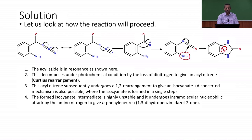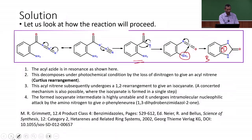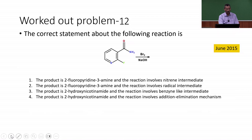This is how the reaction actually proceeds and we can exactly say the intermediate involved is an acyl nitrene and the product is a dihydrobenzimidazol-2-one or we can say ortho phenylene urea. Let us move on to the next problem.